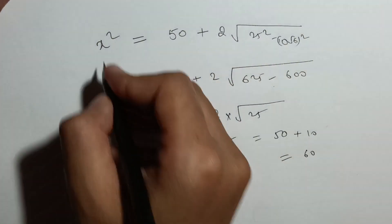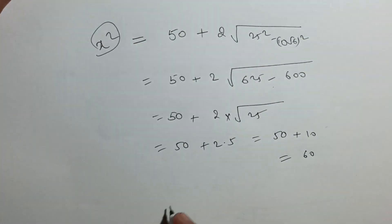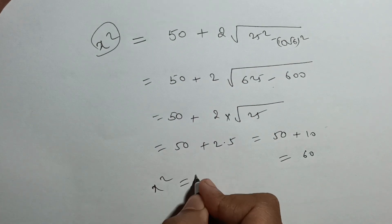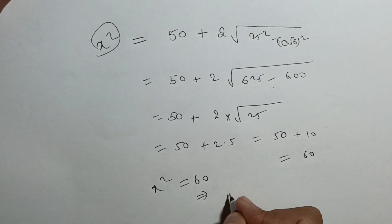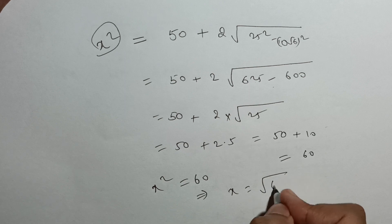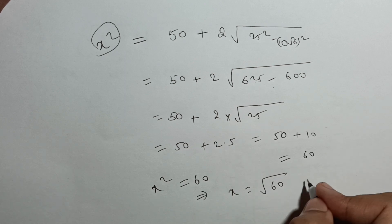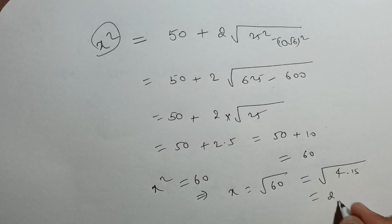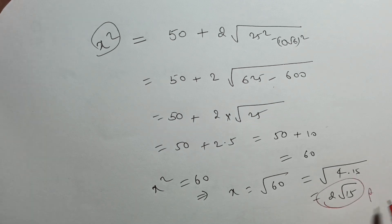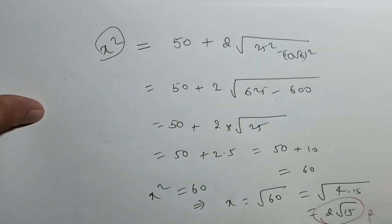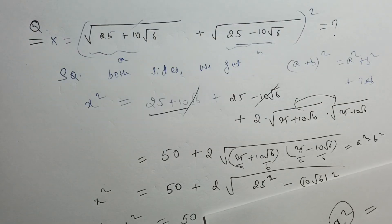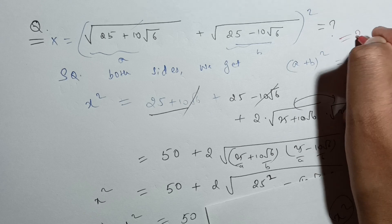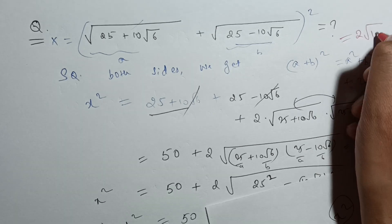Now remember, this is not our answer — this is x² right, but we want x. So x² = 60, which means x = √60 = √(4 × 15) = 2√15. So our answer is not 60 but 2√15. Finally, our answer is 2√15.